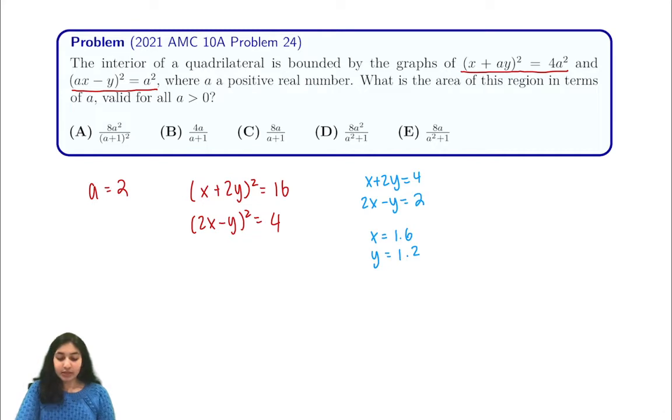In our next system of equations, we have x + 2y equals negative 4 and 2x - y equals 2. In this system of equations, we have x equals 0 and y equals 2.